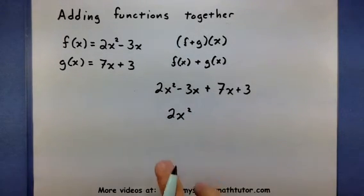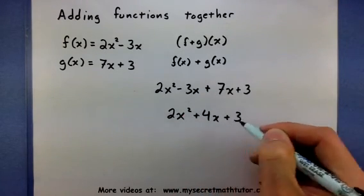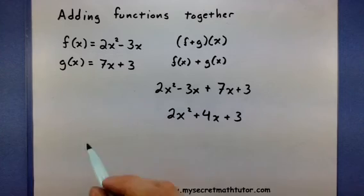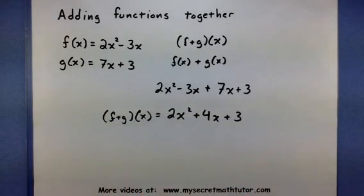So this will give me 2x squared plus 4x plus 3. So this is basically a new function now that represents the sum of f and g. And there you go.